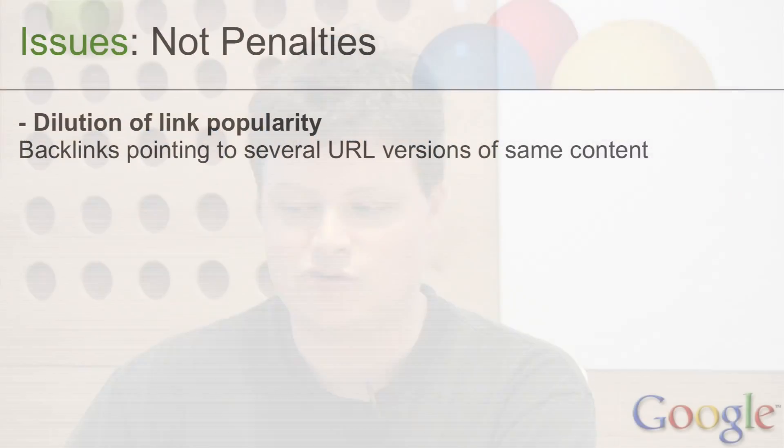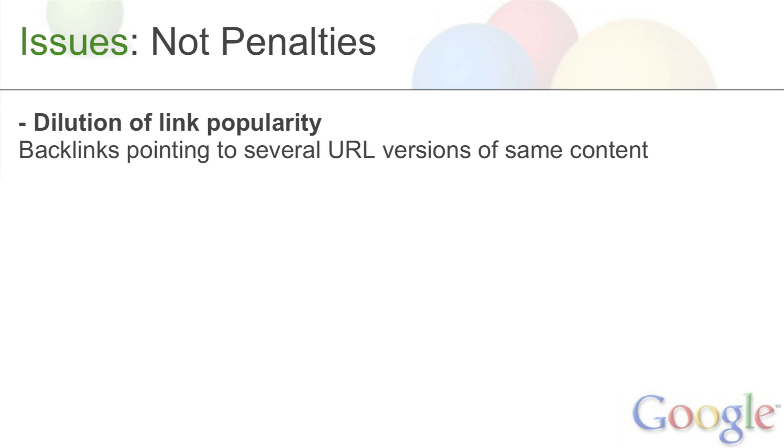So why is this a problem? Obviously there's no penalty associated with this — we're not going to remove the Royal Monarchy website. But what's going on is you can have some side effects that are much more second order. One example is that your links — if you have links to different versions of the page — you're not accumulating all that link juice in one place. So if you have two pages with the same content but different URLs, and you have 10 links to one and 10 links to the other, instead of having 20 links to one page, both of those pages only have 10 links and they're both going to disappear in the rankings, potentially depending on the query.